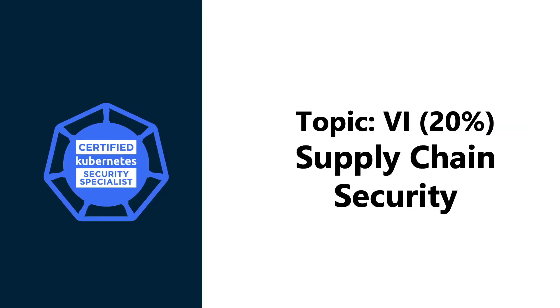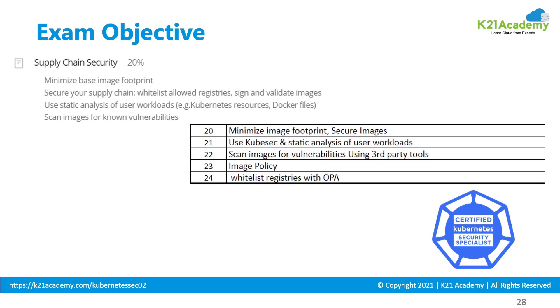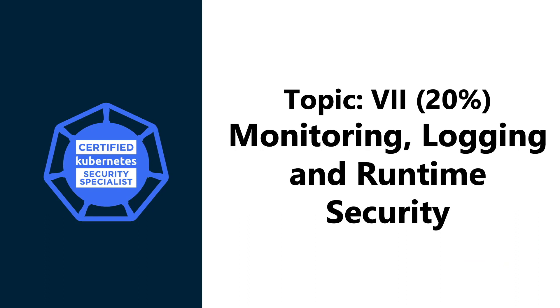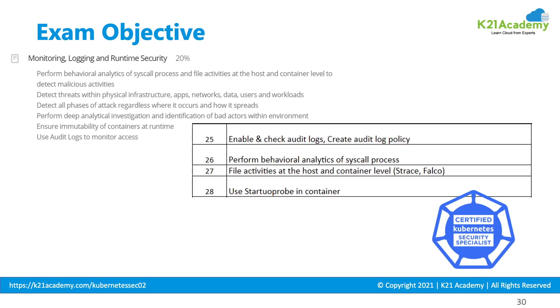Topic 6: Supply Chain Security, weighed at 20%, focuses on securing the supply chain with whitelisted registries, signing and validating images. Kubesec and static analysis are also included. Lastly, Topic 7: Monitoring, Logging, and Runtime Security, weighed at 20%, covers behavioral analytics, threat detection, attack detection, analytical investigation, and monitoring access using audit logs.